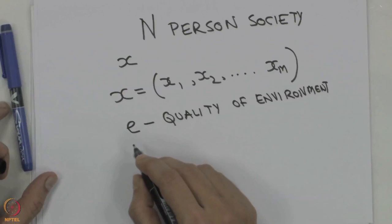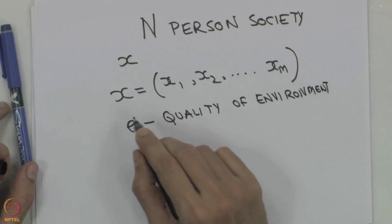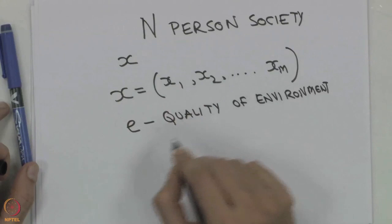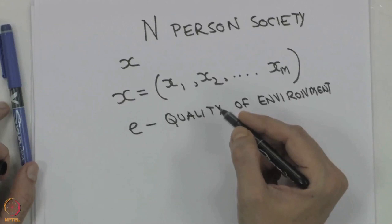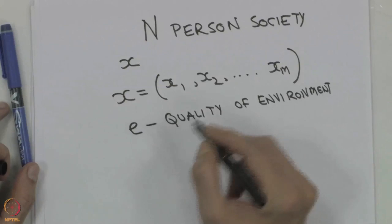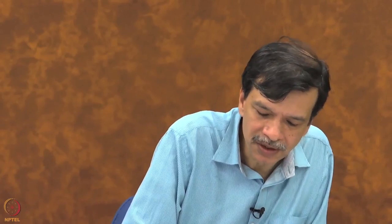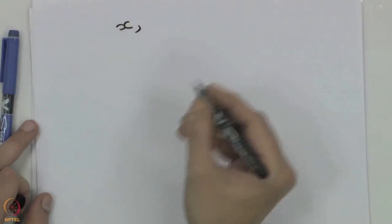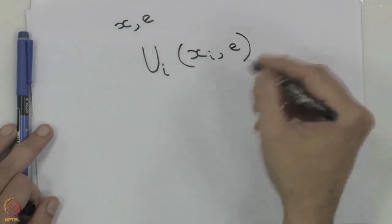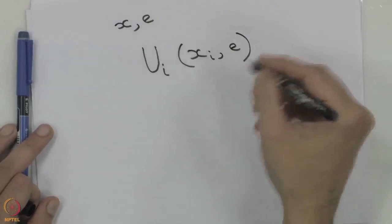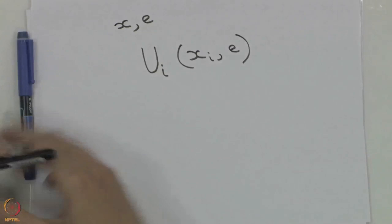The idea is that X was dependent on every individual — every individual has a range of different values of X and also has in their utility some value for the environment. The environment quality, however, is going to be common for all N individuals. So when we talk about the utility and well-being of every individual, there are two things: the composite good X with M different components, and the environment E. Each individual has a utility which is a function of Xi and E, giving N such utility functions.